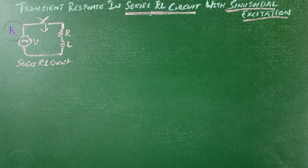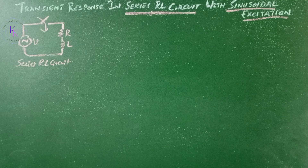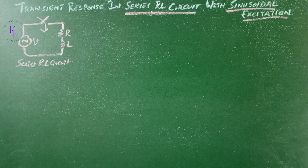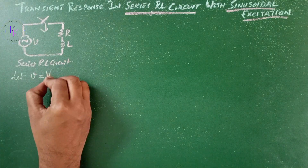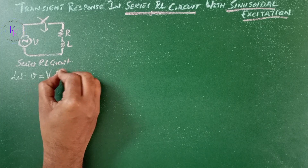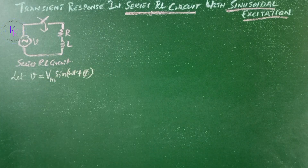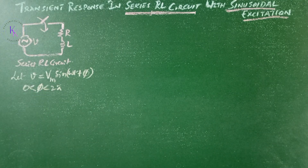Transient response in a series RL circuit with sinusoidal excitation. This is the RL series circuit which is excited by a sinusoidal voltage. Let V equals Vm sin(ωt + φ), where φ varies between 0 and 2π depending upon the switching instant.